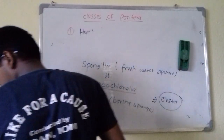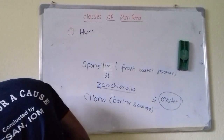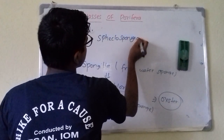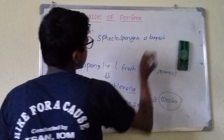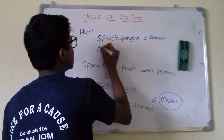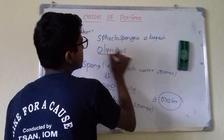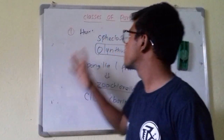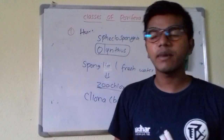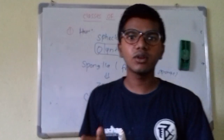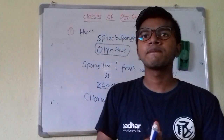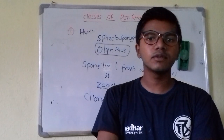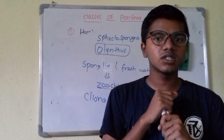The largest sponge is Speclospongia. The ancestral sponge of all sponges is Olynthus. This covers the classes of Porifera and various important Porifera members. If this video was helpful, please like and subscribe for more videos. Thank you.